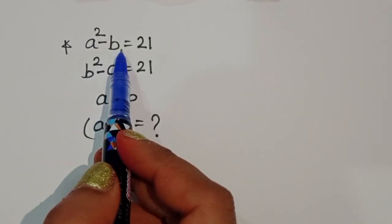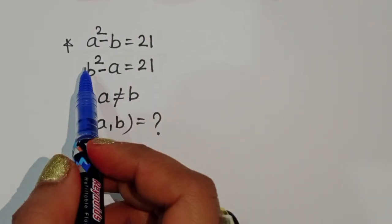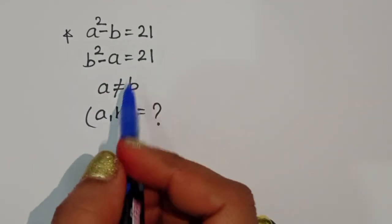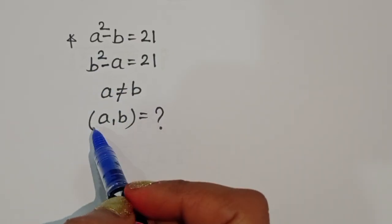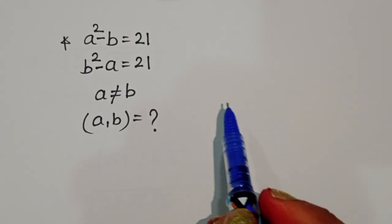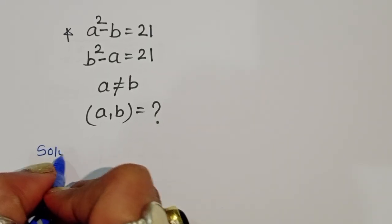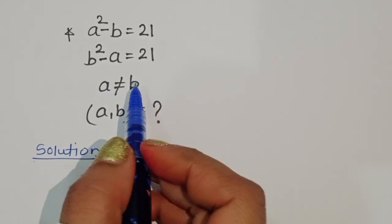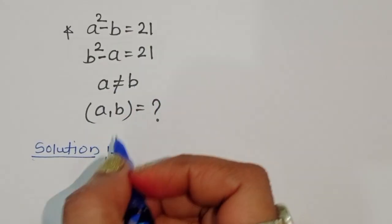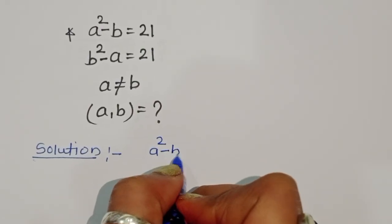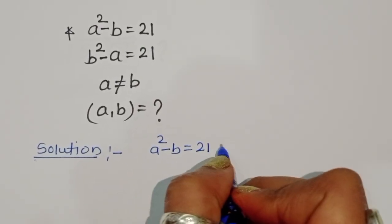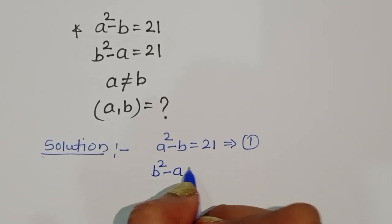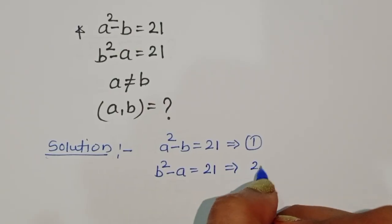The question is: given a² - b = 21 and b² - a = 21, with the condition that a is not equal to b, we have to find the value of ab. Let's see how we can find the solution. The first equation is a² - b = 21 (equation 1), and the next one is b² - a = 21 (equation 2).